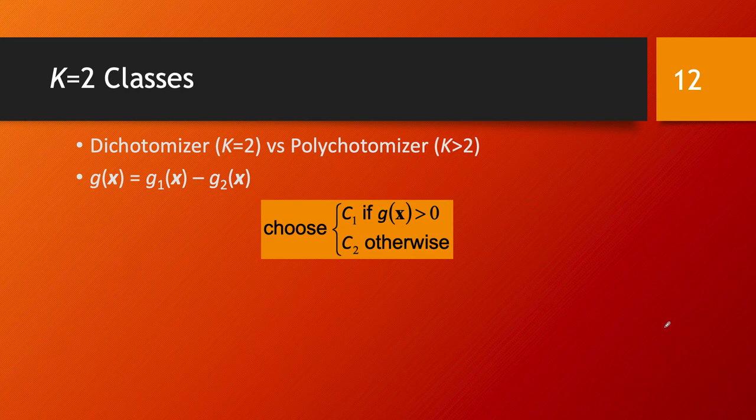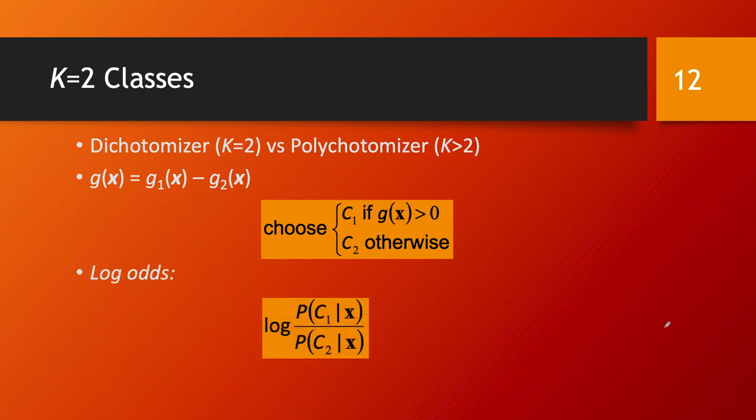One possibility is to choose such a discriminant function g of x to be equal to g1 of x minus g2 of x. Our decision process simply will be: choose class 1 if g of x is larger than 0 and choose c2 otherwise. One possibility in this case is to choose as the discriminant function the so-called log odds, which is the logarithm of the probability of c1 given x divided by the probability of c2 given x.